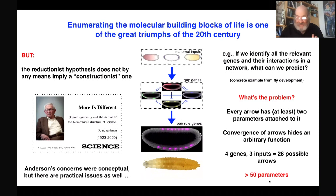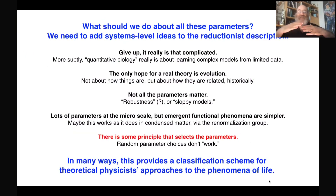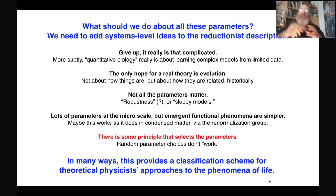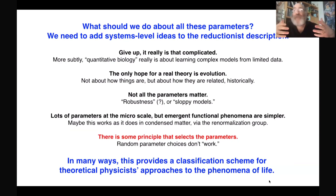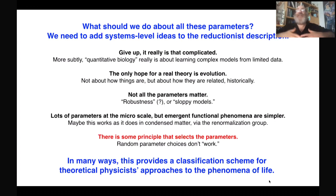This is the block that Anderson was talking about: just because you can do the reductionist exercise of showing that these are all the components that come together to build the pattern of the fly embryo doesn't mean that you can actually do that building back. You found all the pieces, but putting them back together faces this enormous obstacle — in particular, the problem that doing it the straightforward way would involve knowing a very large number of parameters.